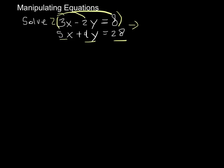So again, we distribute 2 to everything. I get 6x minus 4y equals 16. And then I just keep the bottom equation as is.